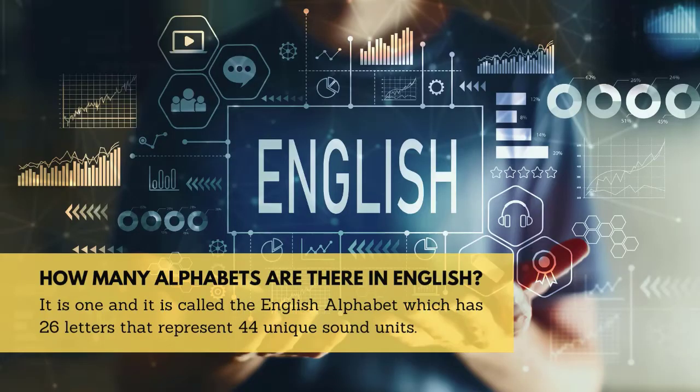Now tell me, how many alphabets do we have in the English language? It is one, and it is called the English alphabet, which has 26 letters that represent 44 unique sound units.